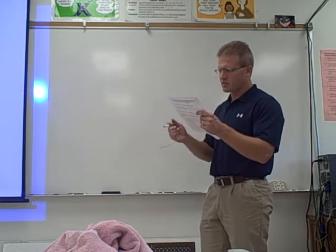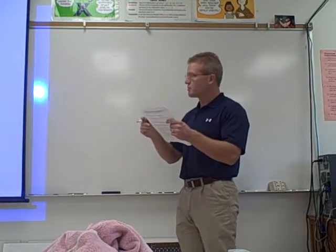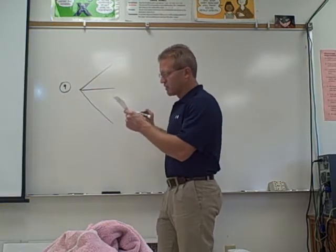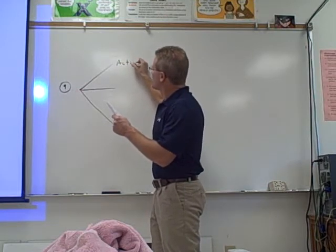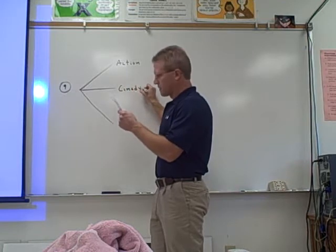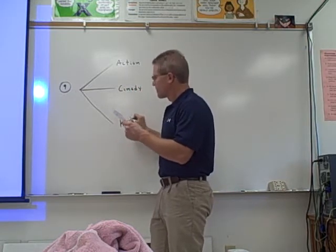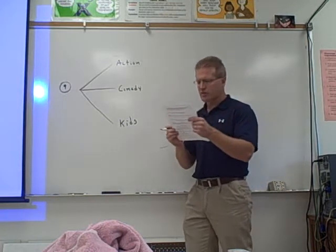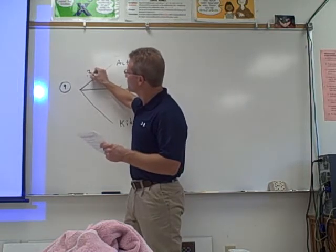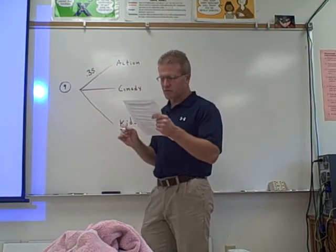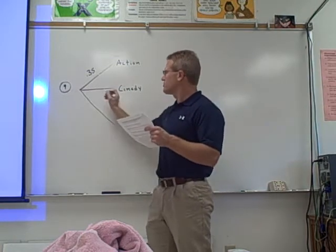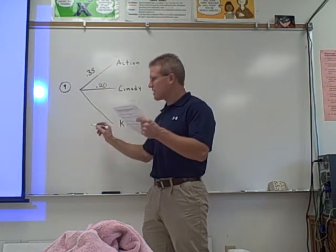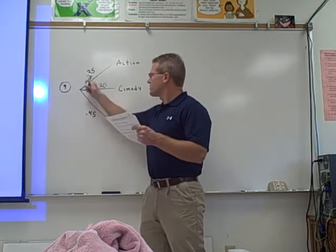A local movie center rents out 35% action movies, 20% comedies, and 45% kids' movies. So we've got three options at this movie store: action movies, comedy, or kids' movies. If you randomly picked a movie that was rented out, 35% of them are action, so there would be a .35 chance it would be an action movie. There would be a .20 chance it's comedy, and the probability of kids' movies rented out is .45. So you put your probabilities next to the lines.